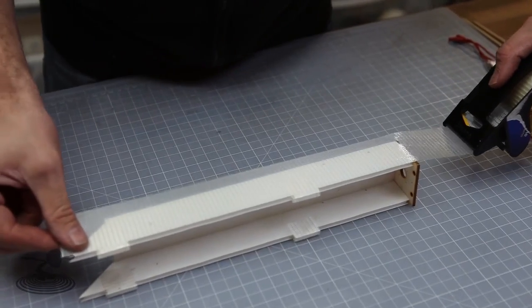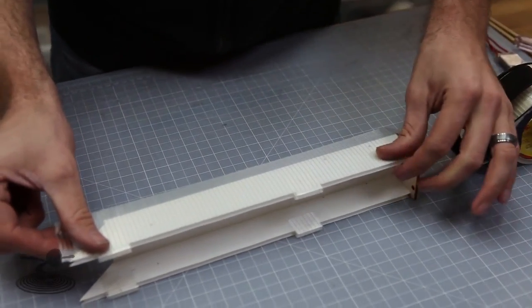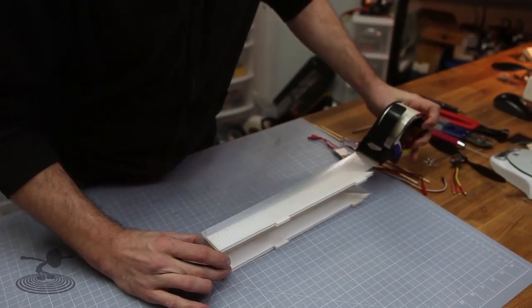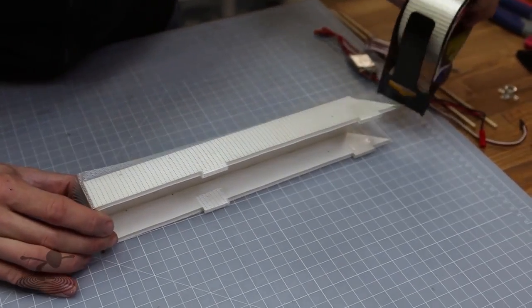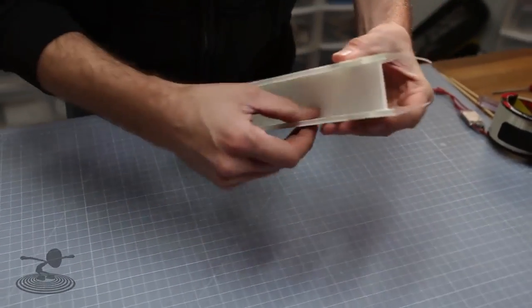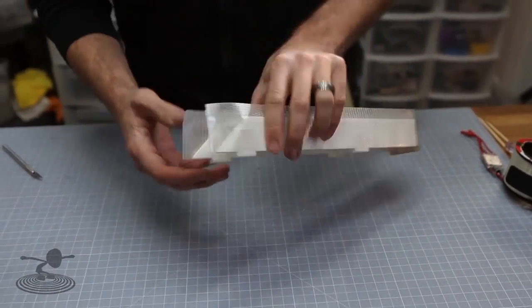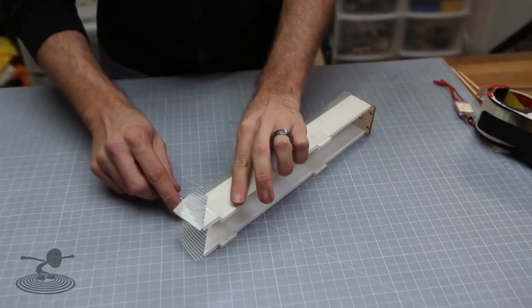Now that we have our tabs reinforced, we're going to go around the perimeter with our packaging tape. Once we get to the end, we can just cut that off and press it down.